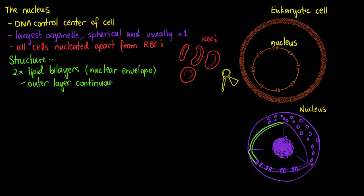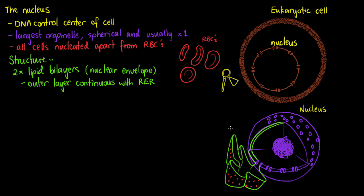The outer layer of the nuclear envelope is continuous with the endoplasmic reticulum — specifically the rough endoplasmic reticulum. The rough endoplasmic reticulum is studded with ribosomes, shown as little red dots. The nucleus itself is also studded with ribosomes on its outer layer. One of the reasons we have two layers within our nuclear envelope is to protect the genetic material housed within our nucleus.